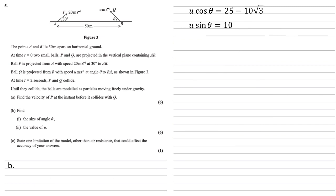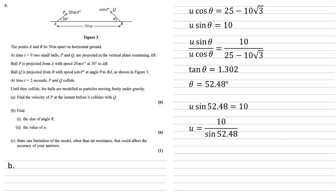So we've worked out that U cos theta equals 25 minus 10 root 3 and U sin theta equals 10. So let's find U and theta. If we divide our U sin theta by our U cos theta, that's going to be 10 over 25 minus 10 root 3. Looking at this, the U's are going to cancel out. Sine over cos is tan. So we get tan theta equals the right hand side, which is 1.302. So theta equals 52.48 degrees. We can now put this in to either of our original equations. Let's go with sine. So U sin 52.48 equals 10. U equals 10 over sine of 52.48, which equals 12.61 meters per second.